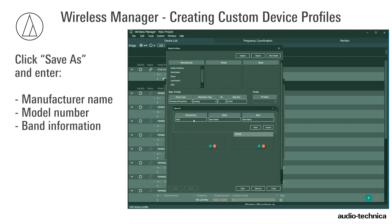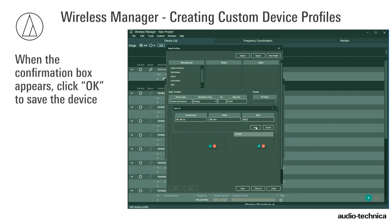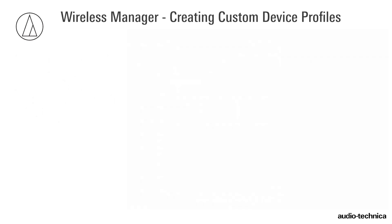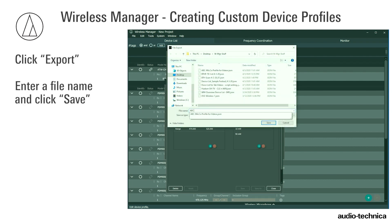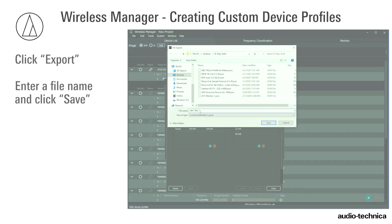Click Save As and enter the manufacturer name, a model number, and band information. When the confirmation box appears, save the device. Custom device profiles can be exported and imported as a data file that can be used with other instances of Wireless Manager. Click Export, enter a file name, and save.